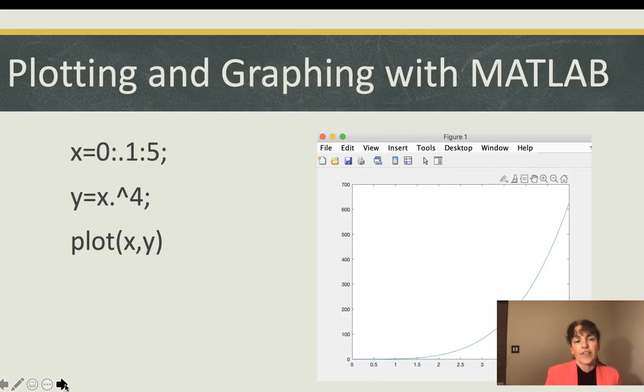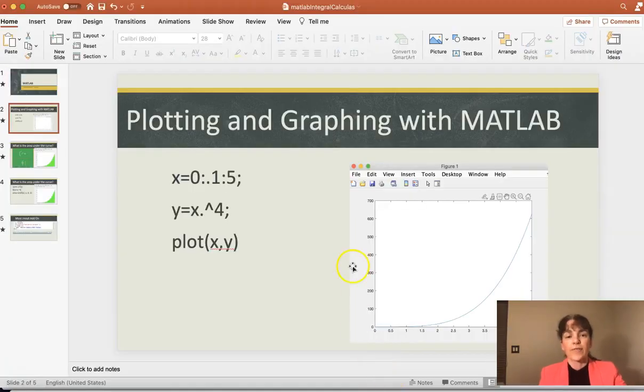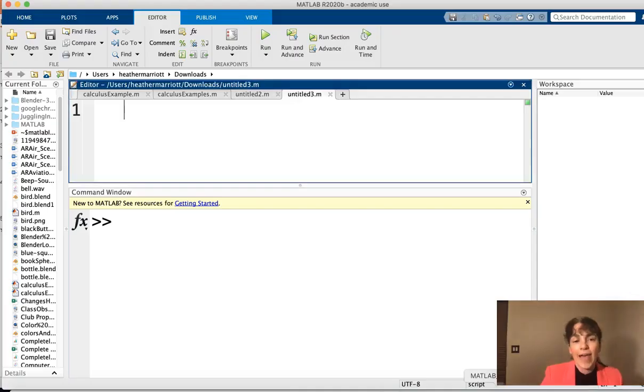So if I want to graph the function x to the power of four, and I want to look at x values between zero and five, how would we do that in MATLAB? Well, first I'm going to specify x goes from zero to five. And if I run just this,